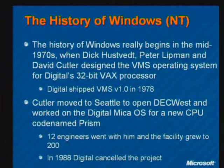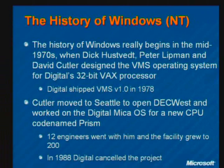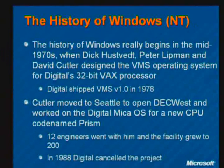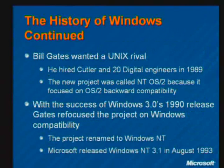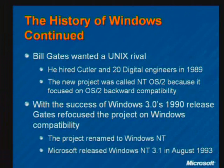Those three people were Dick Hustvedt, Peter Lippman, and David Cutler. The VMS operating system was targeted at Digital's 32-bit VAX processor, and Digital shipped the first version in 1978, right around the time the first version of Unix was released. David Cutler later moved to Seattle in the late 1980s and opened a development facility called DEC West, which was going to work on a new operating system called MICA for a new CPU code-named PRISM. The work that came out of PRISM actually ended up contributing in part to the Alpha processor, but the project was canceled after a couple of years.